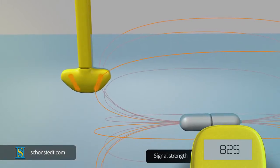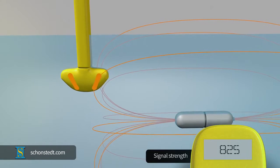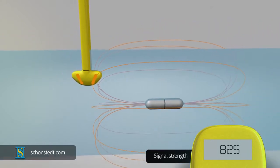In this case, the field lines of the signal emitted by the sonde flow through the sensors, generating a strong signal.